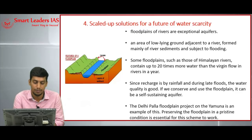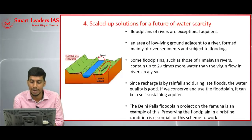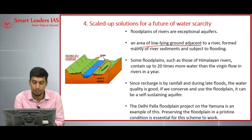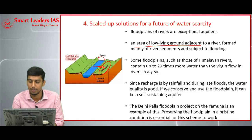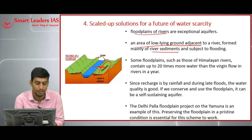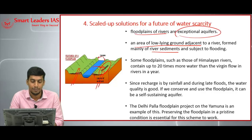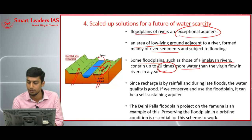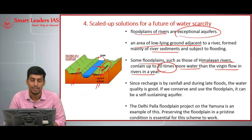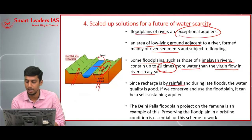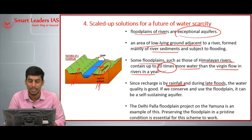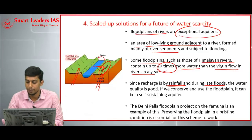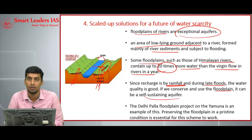A floodplain is an area of low-lying ground adjacent to a river, mainly formed by river sediments, and is subject to flooding. Floodplains of rivers are exceptional aquifers. Some floodplains belonging to Himalayan rivers contain up to 20 times more water than the virgin flow of rivers in a year. Since recharge in the floodplain takes place during rain and late floods, the water quality is very good. If we conserve and use floodplains properly, they can remain self-sustaining aquifers.